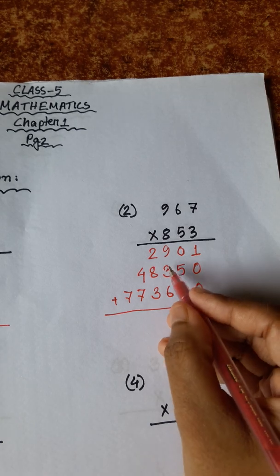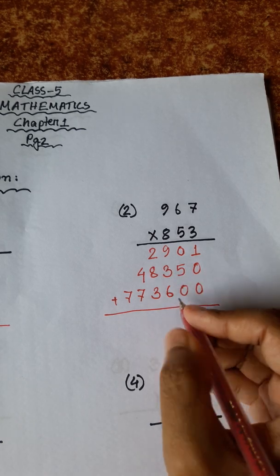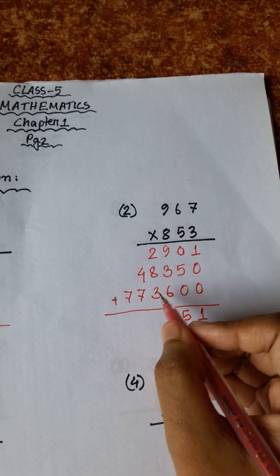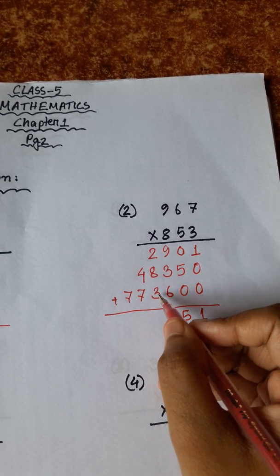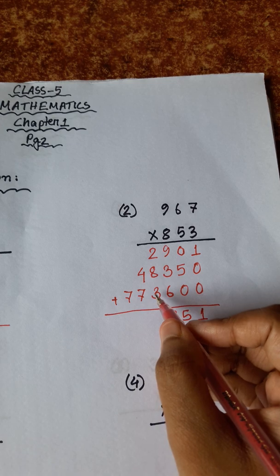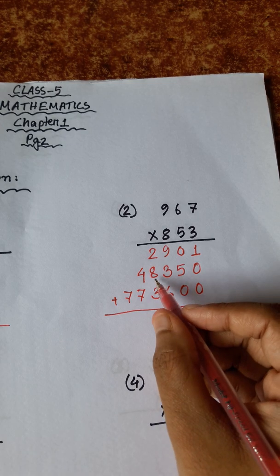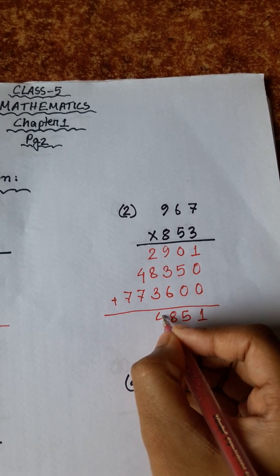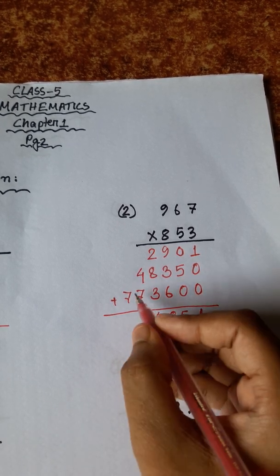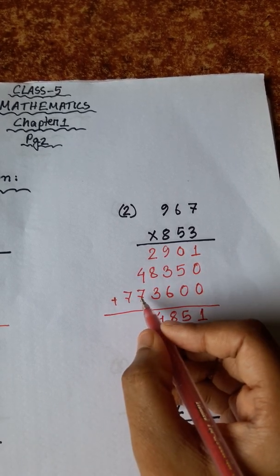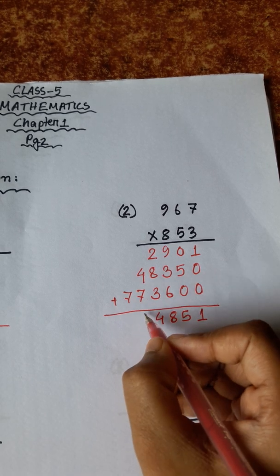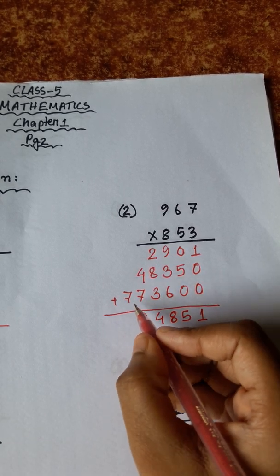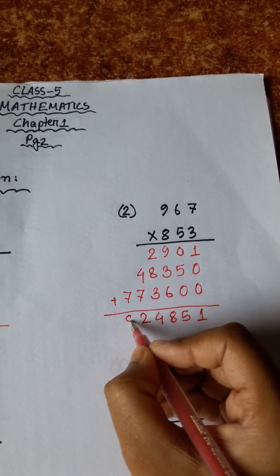9 plus 3 is 12, plus 6 is 18, carry 1. 3, 0, 1. 4, 8 plus 4 is 12, plus 2 is 14, carry 1. 7 and 1. 8 plus 4 is 12, carry 2. 7 and 1, 8.